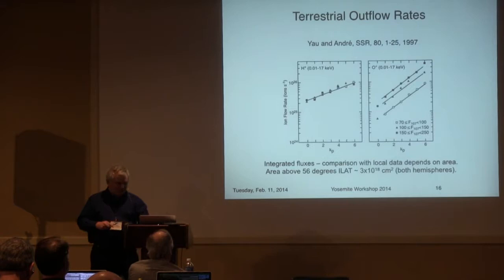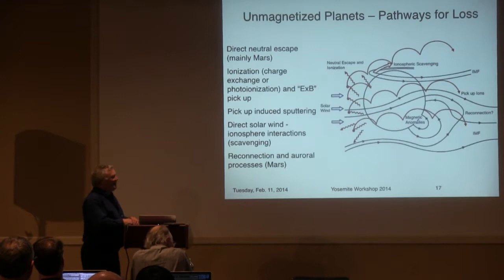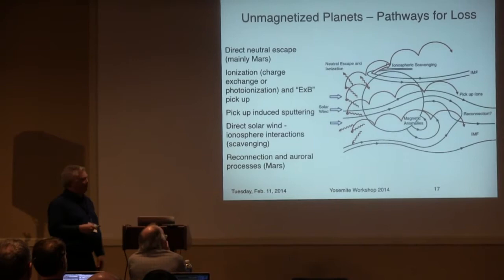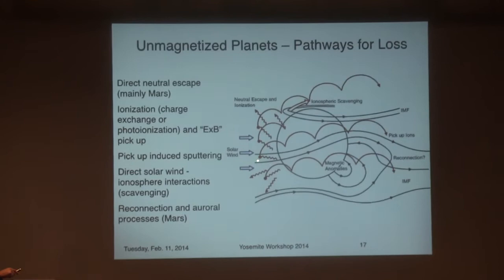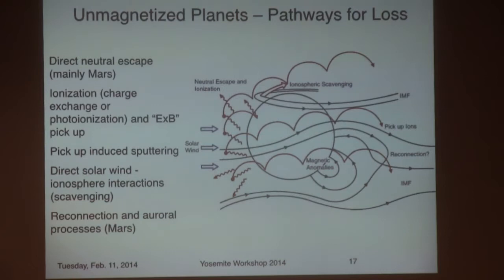For unmagnetized planets, the different outflow processes include: neutrals that come out, charge exchange, and then do cycloidal motion as pickup ions in the solar wind — some going back into the atmosphere and sputtering neutrals out. Some neutrals escape directly at Mars but not at Venus. There's also direct solar wind interaction with the ionosphere, where the IMF acts like a cheese grater scraping the top of the ionosphere off and taking it downtail, entrained in the solar wind. At Mars, magnetic anomalies can also drive auroral ion outflows.